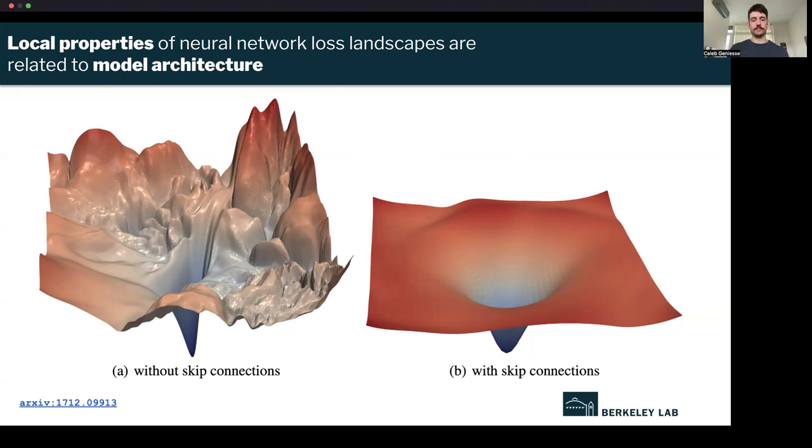What they found was that the structure of this loss landscape relates to things like model architecture. Here I'm showing a very simple model on the left, and then on the right, I'm showing what's called a ResNet, which incorporates these residual connections. On the left, you can see there's a very rough and maybe difficult to optimize loss surface. On the right, you have this very smooth surface. They found that the model on the right has better generalization performance, which means it performs better on data it hasn't seen. This related to the smoothness of the local loss landscape.